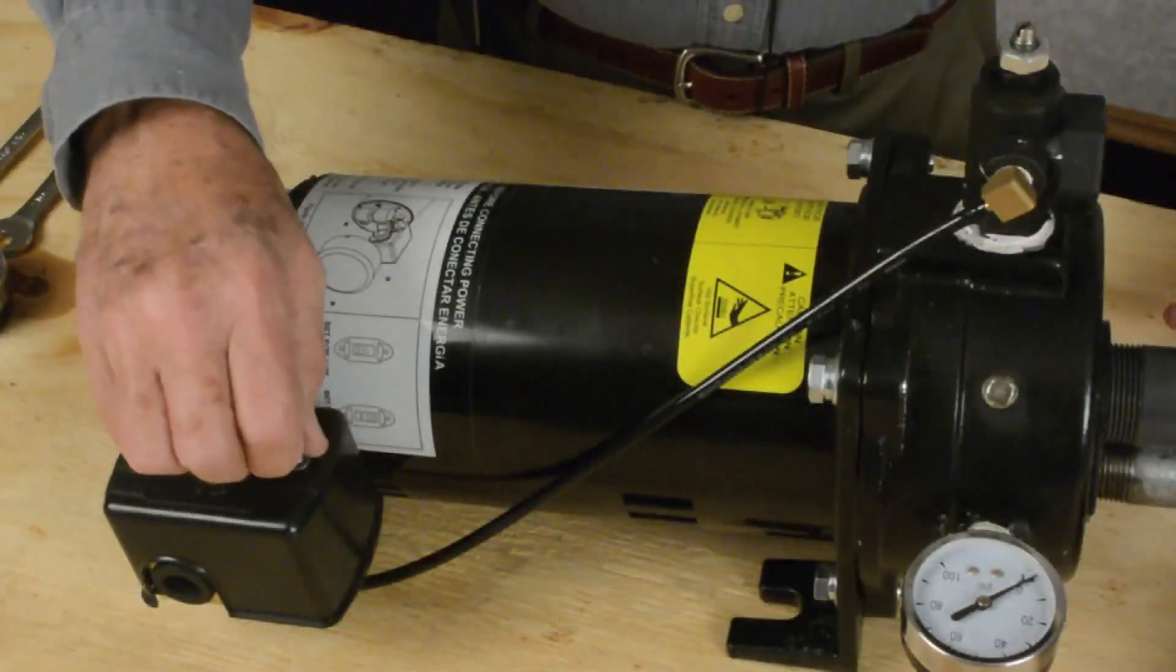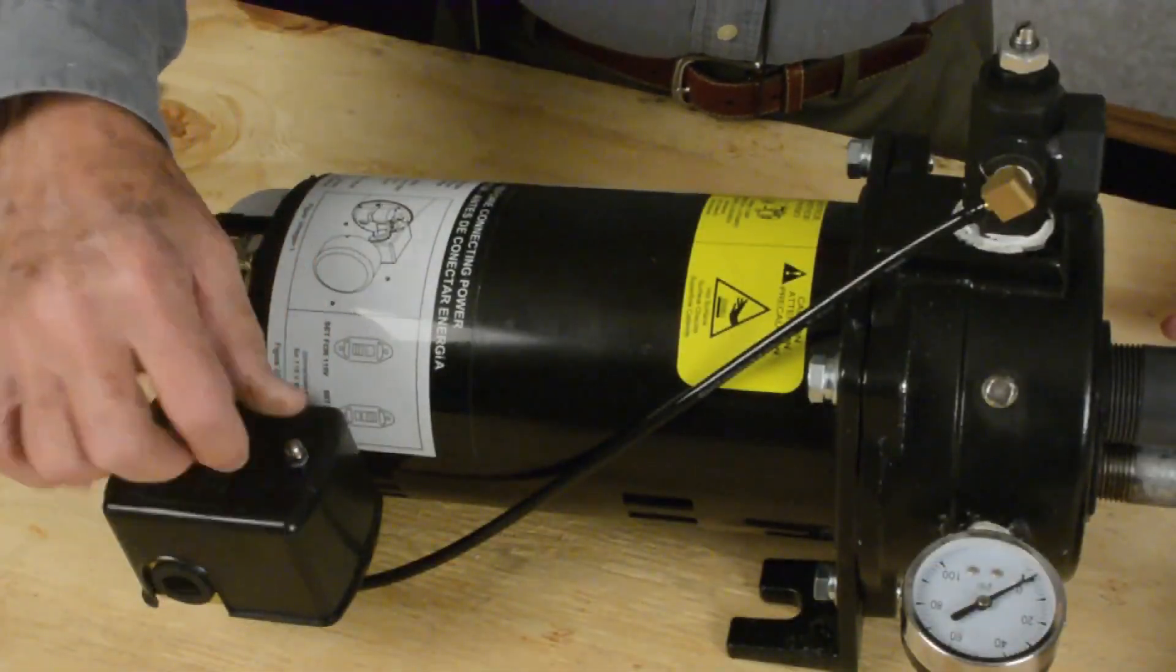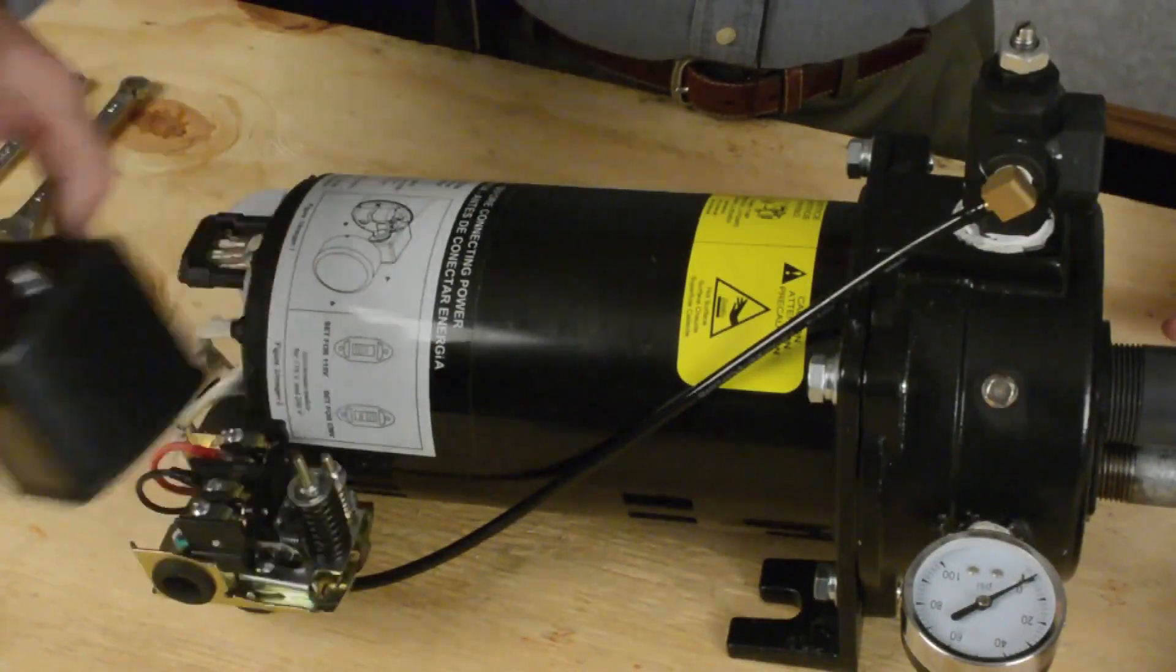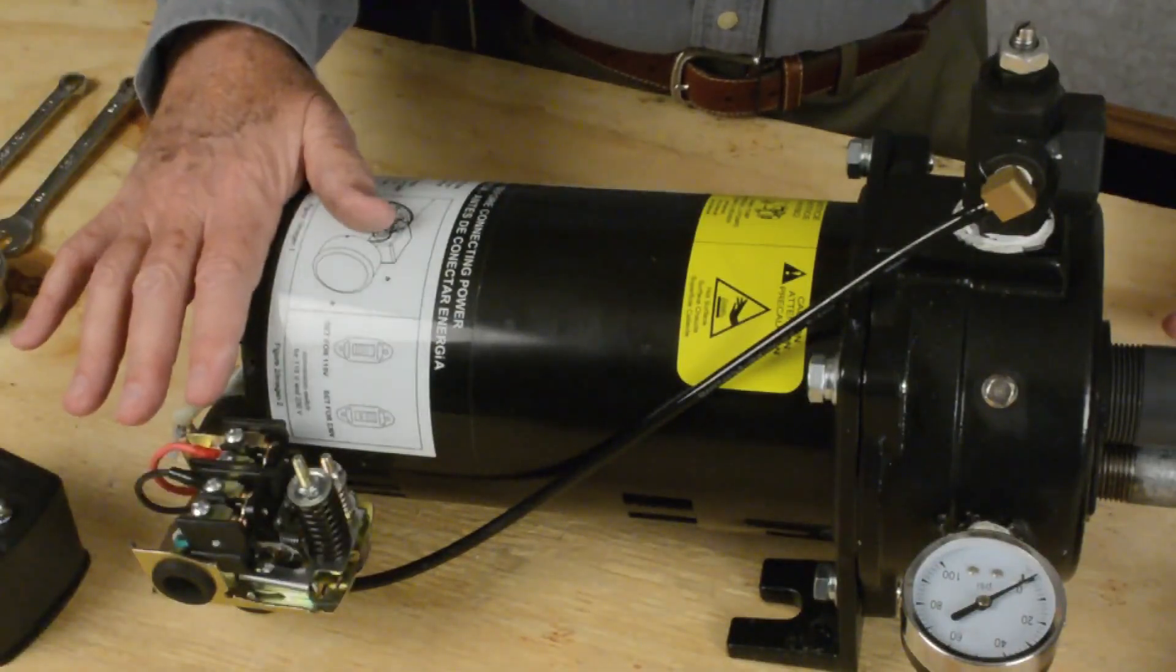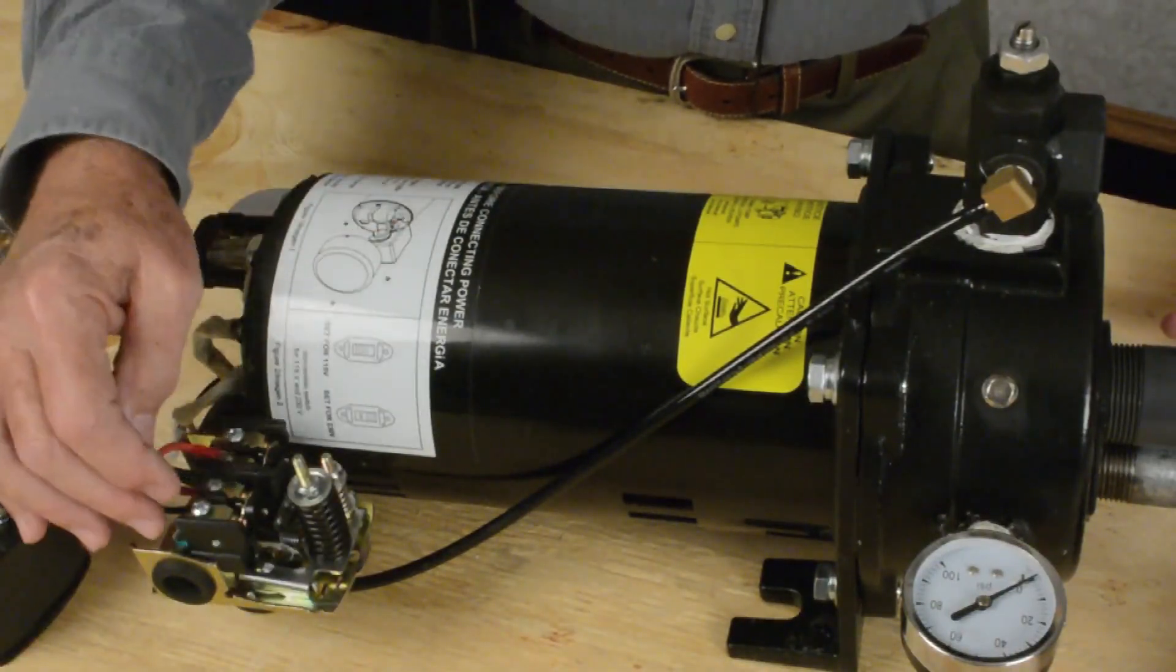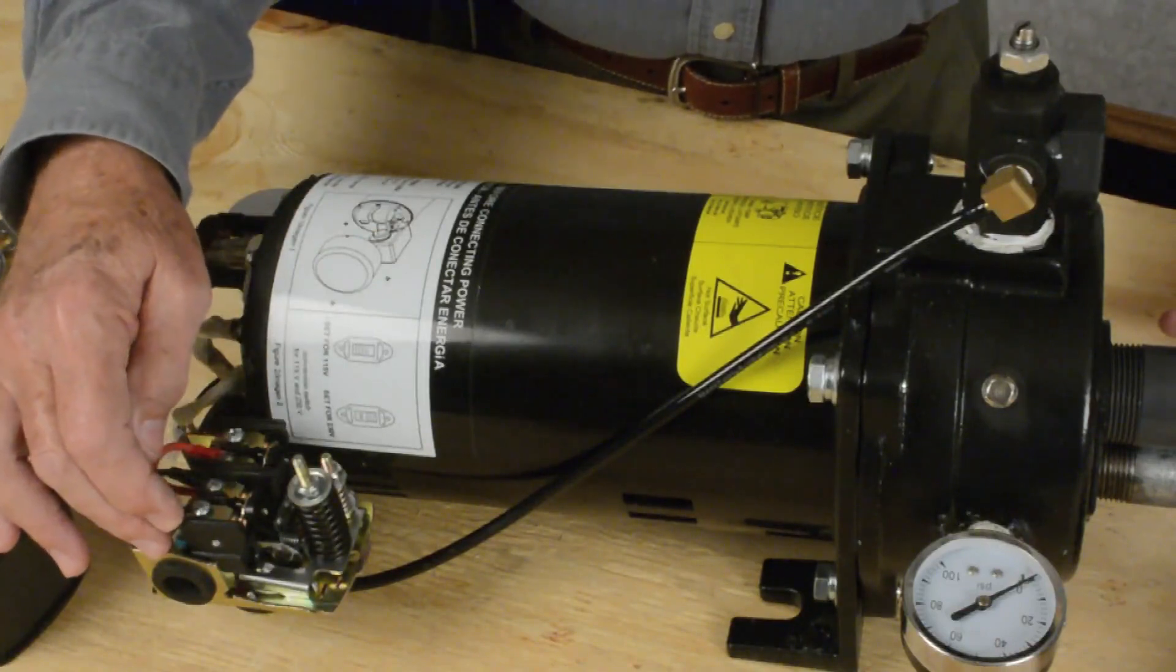This is the pressure switch. Take your cap off. It already comes set 30-50, which means on at 30 pounds, off at 50 pounds.